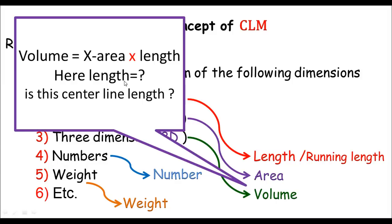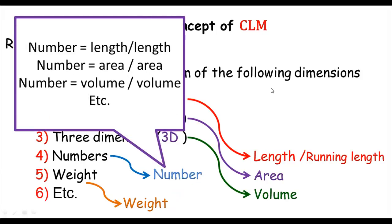After some time I'm doing just a few examples, so I hope you'll understand the basic concept of the center line method. The number is just length divided by length, area divided by area, or volume divided by volume. For example, if I have to calculate the number of bricks in a wall, I can say the volume of the wall divided by the volume of one brick — that would be the number of bricks. And if I need to calculate the number of tiles per floor, the total area of the floor divided by the area of one tile will be the number of tiles. So the number does have length in there because area and volume both have length.